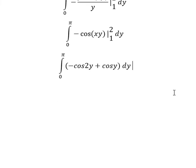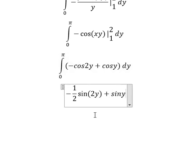And now we can get the final answer. The integration of cosine 2y, we will have about one over two sine 2y. This one is about sine y, and now we can put the bounds in here.